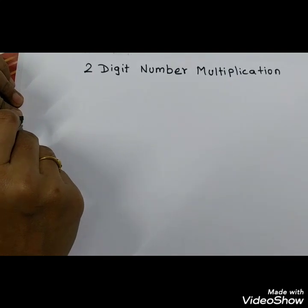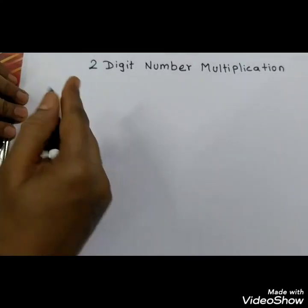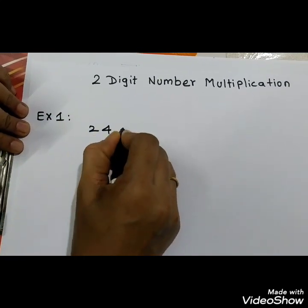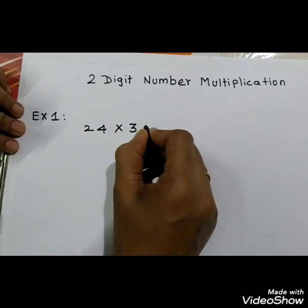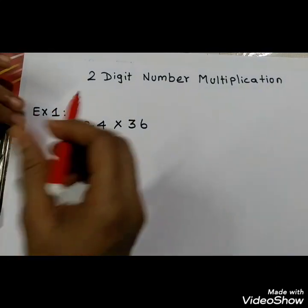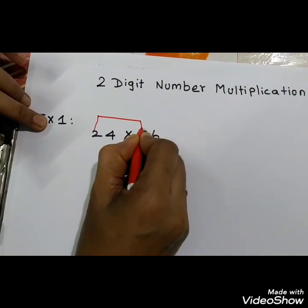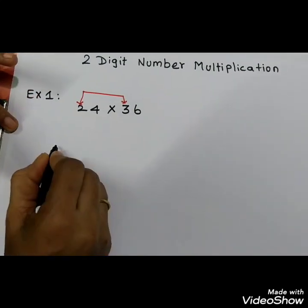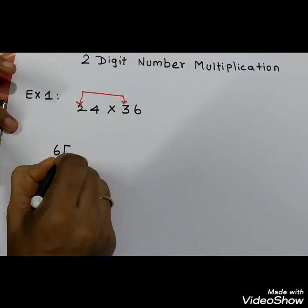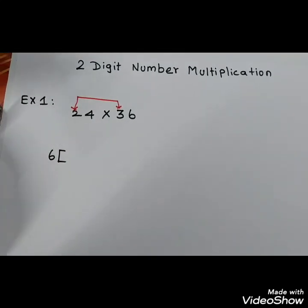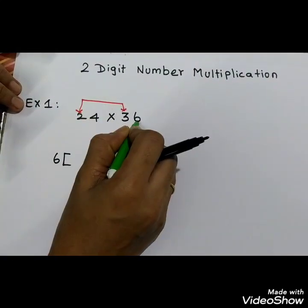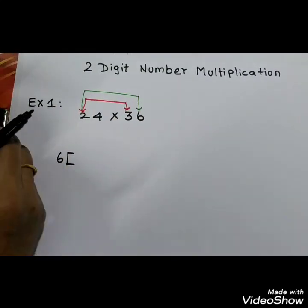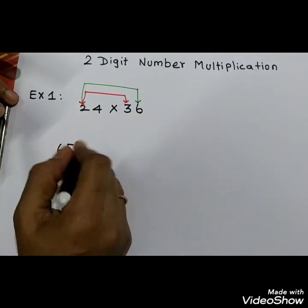Now, how to multiply a 2-digit number from 20 to 99. First example: 24 into 36. Step 1: take the first digits of each number and multiply — 2 times 3 is 6. Step 2: take the first digit of the first number, multiply by the second digit of the second number — 2 times 6 is 12.